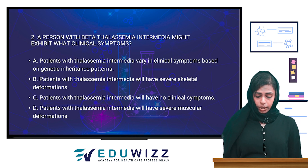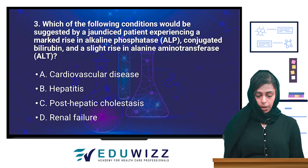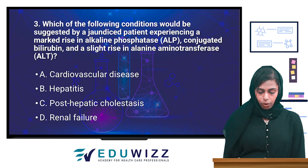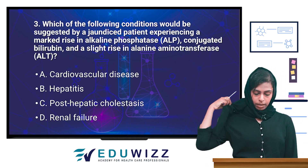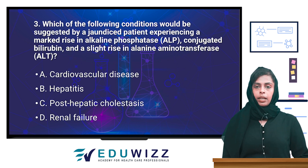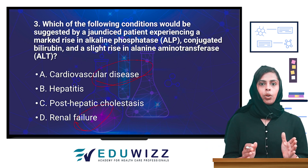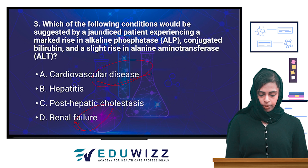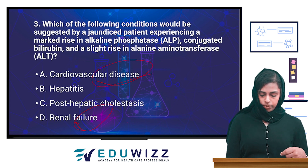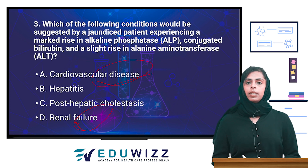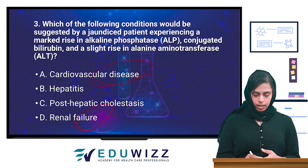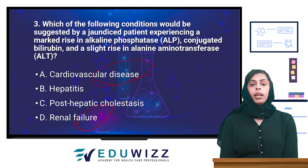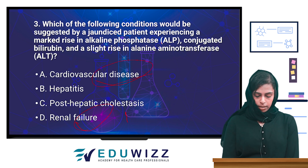The next question: which condition would be suggested by a jaundiced patient experiencing a marked rise in alkaline phosphatase, conjugated bilirubin slightly raised, and alanine aminotransferase increased? Alkaline phosphatase increases, conjugated bilirubin increases — mostly conjugated bilirubin increases. So the answer is post-hepatic cholestasis.